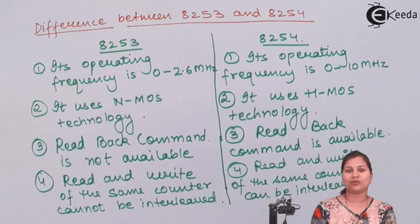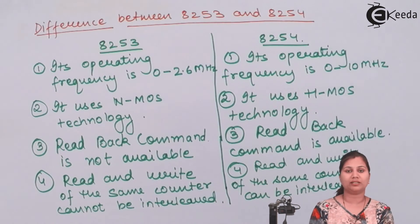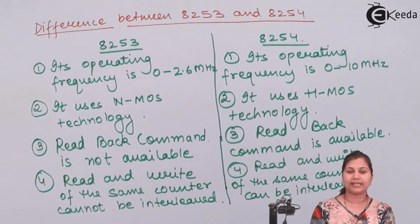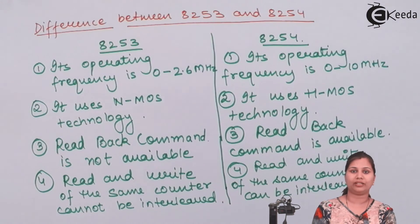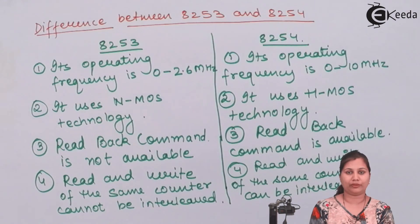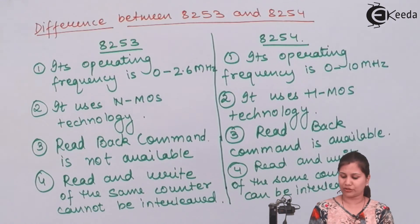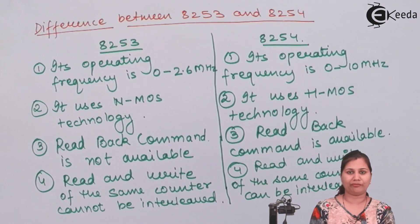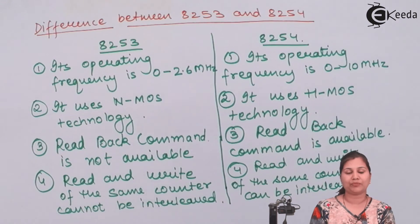In this video we studied about the programmable interval timer ICs 8253 and 8254. The 8254 is a higher version of 8253 — they have all the same similarities, with only four differences between the two ICs. I hope this topic is clear to you. Thank you.